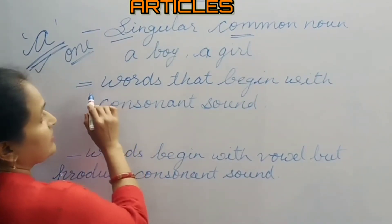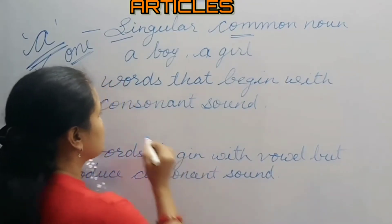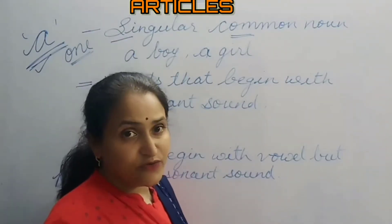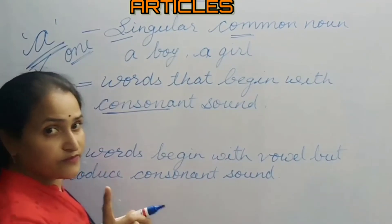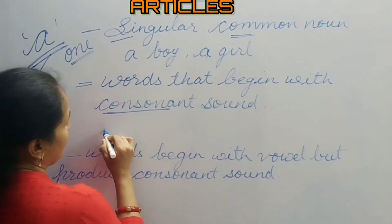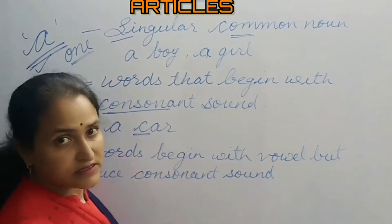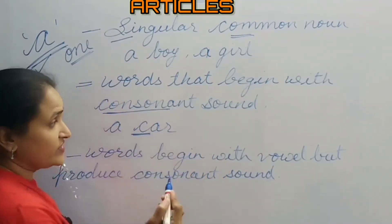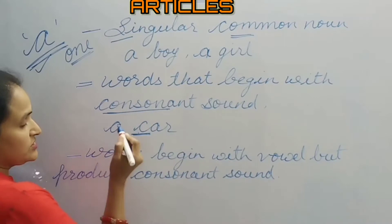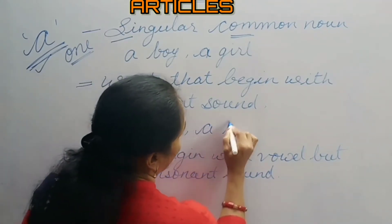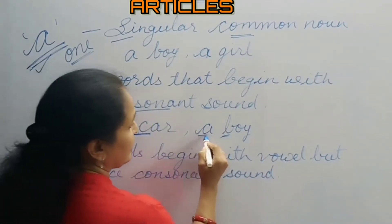Article 'a' is used before words that begin with a consonant sound. I have already explained what a vowel sound and a consonant sound are. For example, 'a car' — car starts with a consonant and the sound is also a consonant sound. Similarly, 'a boy' — 'bu' is a consonant sound, so we use article 'a' with the word boy.